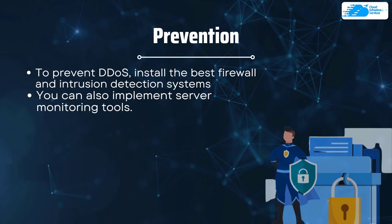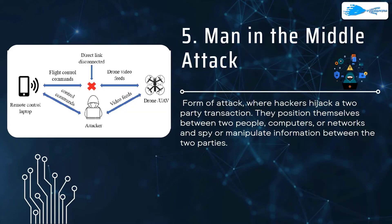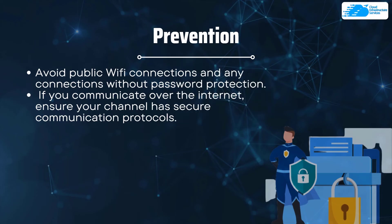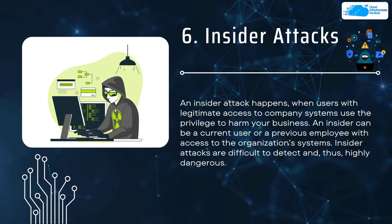Number five is the Man-in-the-Middle attack. This is where a hijacker positions themselves between two parties' computers or networks, spying on and manipulating information being transferred between them. To prevent it, avoid public Wi-Fi connections and any connections without password protection. If communicating over the internet, ensure the channel uses secure communication protocols.